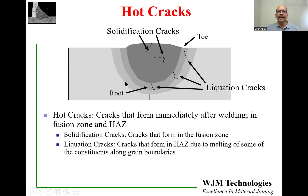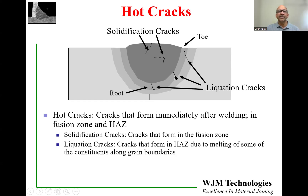Then there are other cracks called liquation cracks. These cracks form in the partially melted zone, and they can occur near the toe of the weld where there are high stresses, near the root of the weld where there are also very high stress locations, but also can occur at other locations.